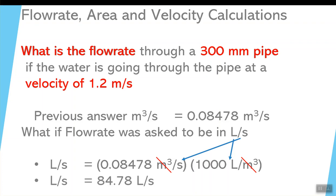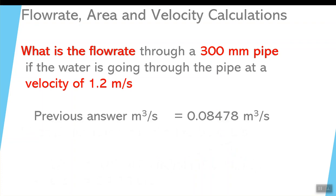And when we get that answer, 84.78, that makes sense. Because, when you go from cubic meters to liters, you move the decimal three spots to the right.